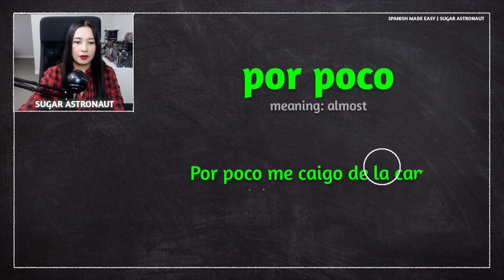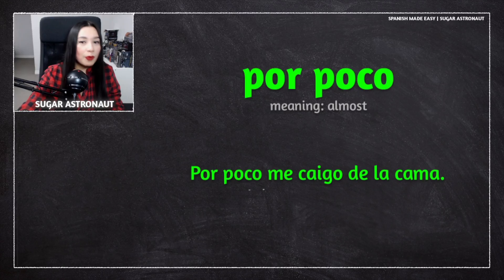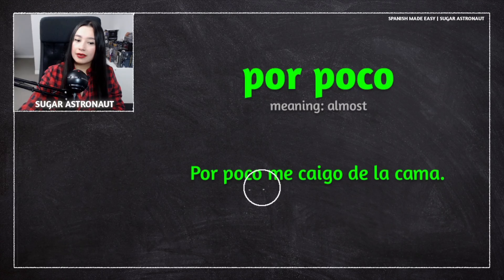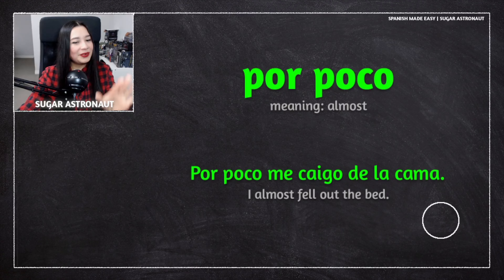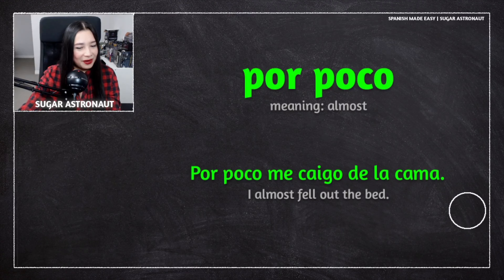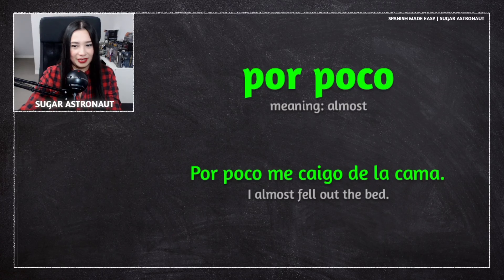For example: por poco me caigo de la cama. Por poco me caigo de la cama. This means I almost fell out the bed. Almost — you didn't fall out the bed. It's all good. It was an almost situation.